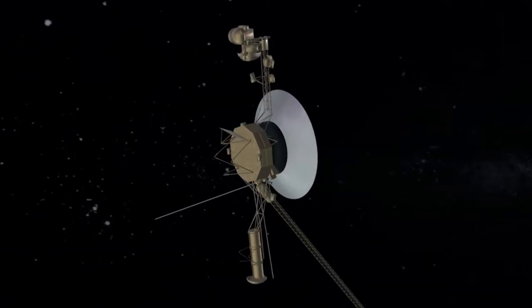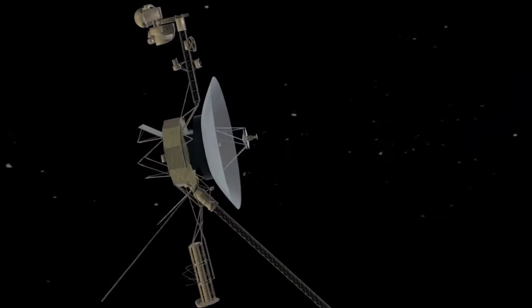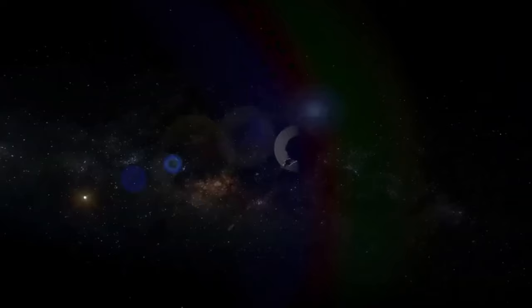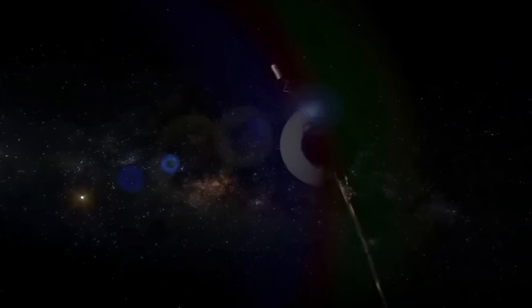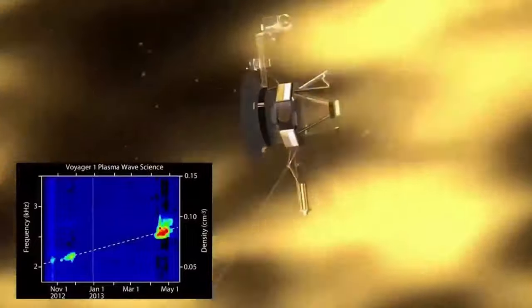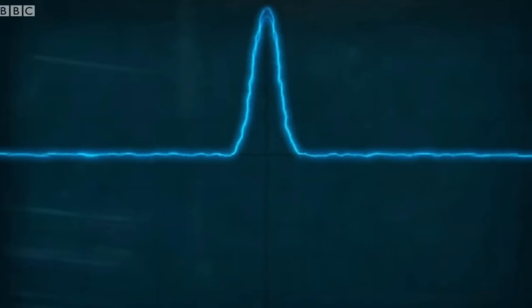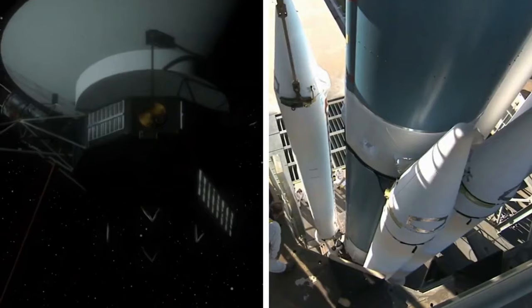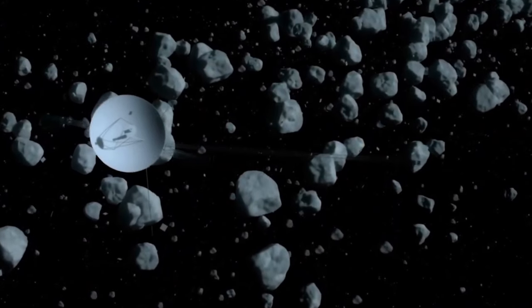With the probe nearing the end of its days, it's only ideal to recap its enigmatic wonders and discoveries. Starting from the late 1970s when it first flew by Jupiter, Voyager 1's flyby of Jupiter revealed several shocking details about the planet that scientists had earlier not known, such as the thin ring around the planet and two new moons, Thebe and Metis.